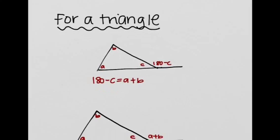So for a triangle, the exterior angle is going to be 180 minus c, right? Because this is just supplement, they're supplementary angles.